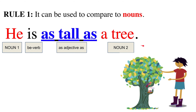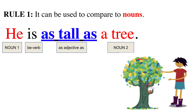Here we have noun one: 'he.' We have the be verb, and we have 'as adjective as.' Our adjective here is 'tall,' so 'as tall as.' And noun two is 'tree.' What this means is he's the same height — he is as tall as a tree.